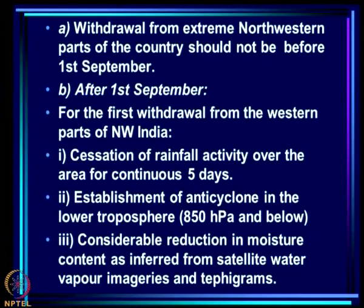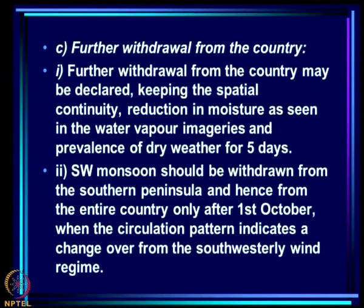After 1st September for the first withdrawal from the western parts of north-west India, IMD looks at cessation of rainfall activity, establishment of anticyclone in the lower troposphere over the monsoon zone, and considerable reduction in moisture content as inferred from satellite data. For further withdrawal across the country, they look at spatial continuity, reduction in moisture seen in water vapor imagery, and prevalence of dry weather for 5 days. Southwest monsoon should be withdrawn from the southern peninsula and hence from the entire country only after 1st October when the circulation pattern indicates a change from south-westerly to north-easterly wind.